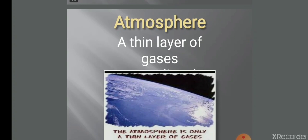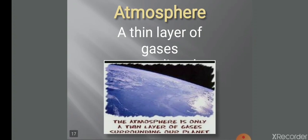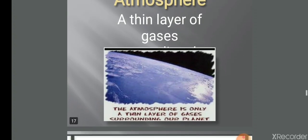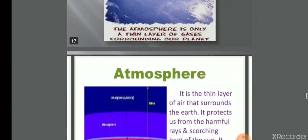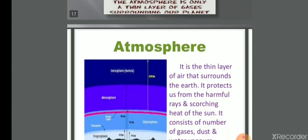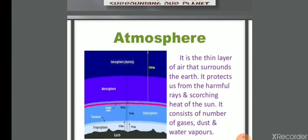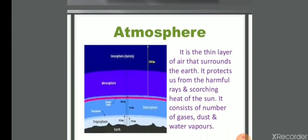Atmosphere means sphere of air. It is the thin layer of air that surrounds the earth. It protects us from the harmful rays and scorching heat of the sun. It consists of a number of gases, dust, and water vapors.